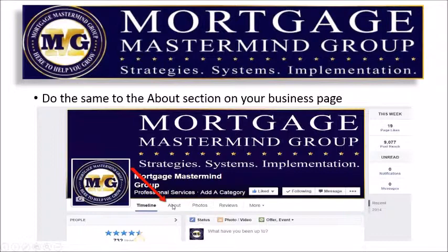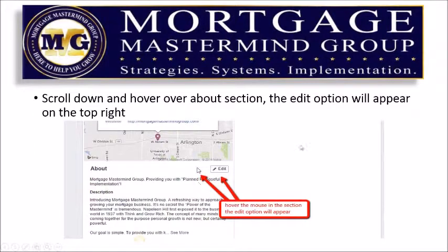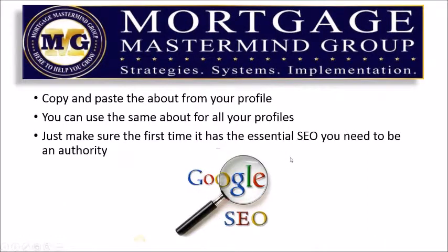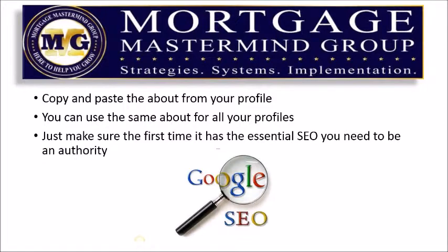On your business page, you select about, scroll down and hover over your about section, and the edit option will appear at the top. You want to make sure that it says the same thing that you said in your personal profile. You're going to copy and paste your about section from your profile to all of your other social profiles. You can use the same one — just make sure the first time it has all of the essential SEO you need to be an authority.